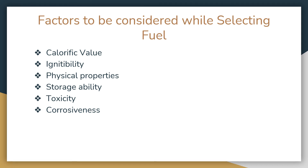Once all those conditions are addressed, the next topic is the selection of fuel. There are six factors considered when selecting a fuel for a ramjet engine: first, calorific value; second, ignitability of the propellant; third, physical properties; fourth, storage ability — how the fuel is stored; fifth, toxicity; and sixth, corrosiveness.